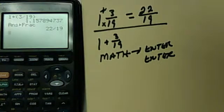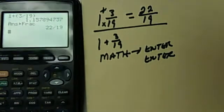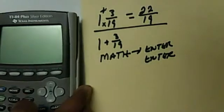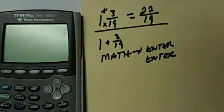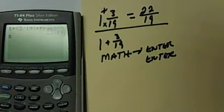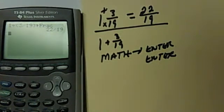I have a TI-84 that does not have an upgrade and then I have a TI-84 that has an upgrade. Even with the TI-84 that has the upgrade in it, we can still do what we just did. 1 plus parentheses 3 over 19 and then math, enter, enter to get us 22 over 19.